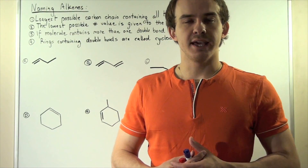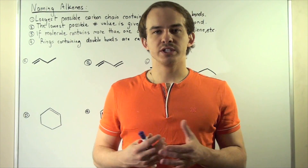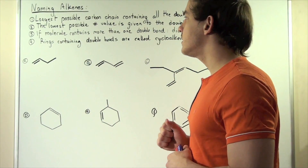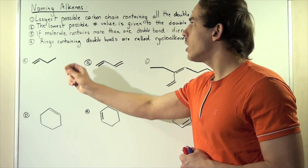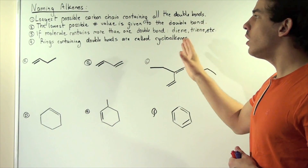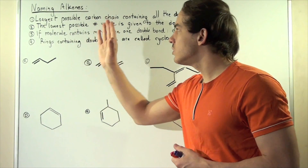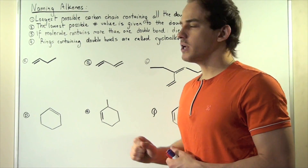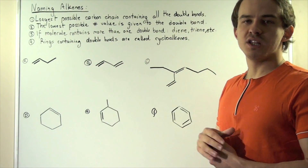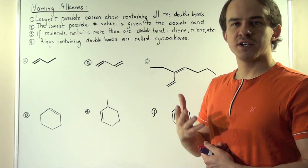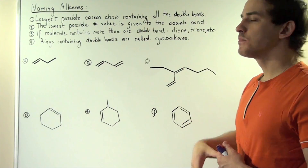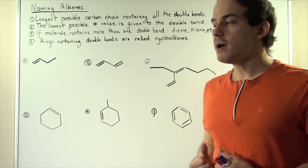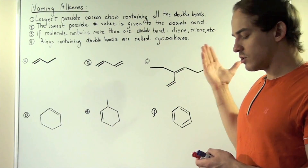Naming alkenes is very similar to naming alkanes, but a few differences do exist. Let's look at a few important rules for naming alkenes. Rule one: find the longest possible carbon chain containing all the double bonds. Rule two: the lowest possible number value is given to the double bonds. Rule three: if molecules contain more than one double bond, we give it a specific name — two double bonds is a diene, three double bonds is a triene. Rule four: ring compounds containing double bonds are called cycloalkenes.